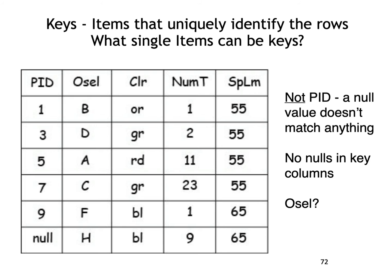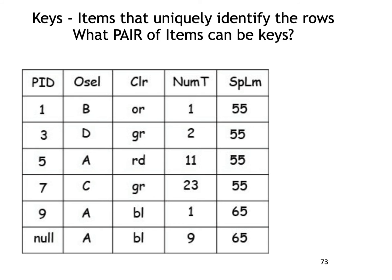Null sometimes confuses people. A null is a spanner in the works — it makes a column impossible to be a key because null matches anything and it matches nothing. You can't have nulls in a key column. Nulls play havoc with functional dependencies on that column. You can have a column that's functionally dependent on another column that has nulls, but you can't have the null be a key column if there is a null in that column.